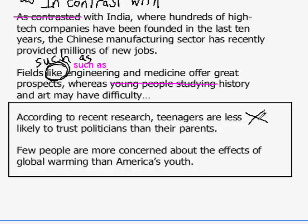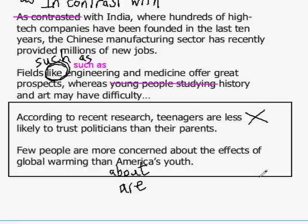Another example: 'Few people are more concerned about the effects of global warming than America's youth.' Does this mean few people are more concerned about global warming than they are about America's youth — two different concerns? Or does it mean than are America's youth — comparing America's youth with other people? Again, watch the ambiguity and look for a choice that clarifies the meaning.